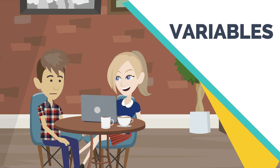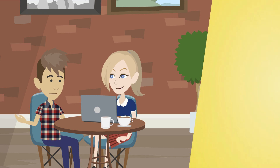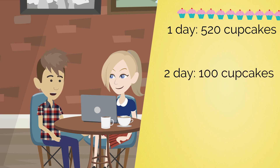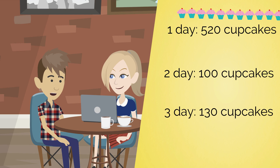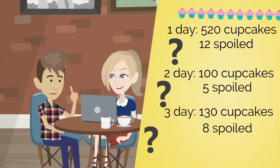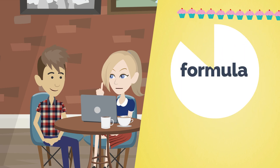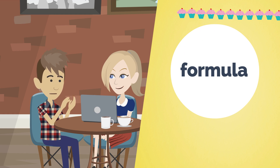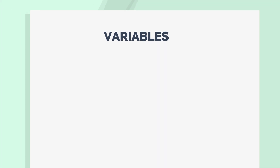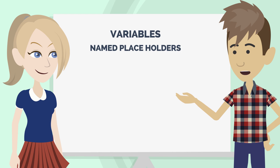Tell me, Sophia — you know how much money you'll make if you produce 520 cupcakes in a day, but what if the next day you could only bake 100 cupcakes and then 130 cupcakes the day after that? What if each day the number of cupcakes spoiled also differed? Would it be a good idea to do the whole calculation for each quantity every time? No, it would be nice if we could use some sort of a formula. Exactly — this is where variables come in.